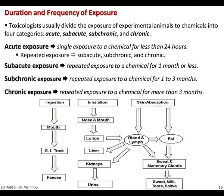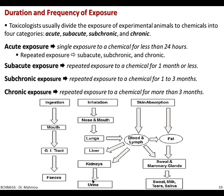In the figure, injection of a toxicant leads to the mouse GI tract and then goes to the feces. Inhalation goes directly to the nose and mouth, then to the lungs, from which it can go straight to the blood. If absorbed through skin, there are two routes: through the blood or through the fats and hence to sweat glands — traces can be found in sweat, milk, tears, and saliva. Through blood it can reach the liver and kidney and be detected in urine.